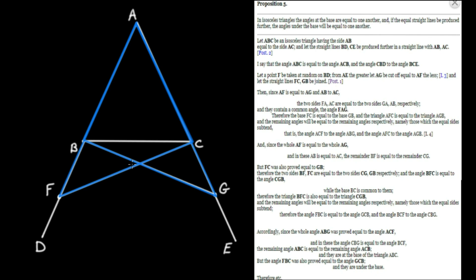Now we're going to take note of another pair of equal triangles, drawn in red: triangle FBC (from F to B to C and back) and triangle CGB (from B to G to C and back).